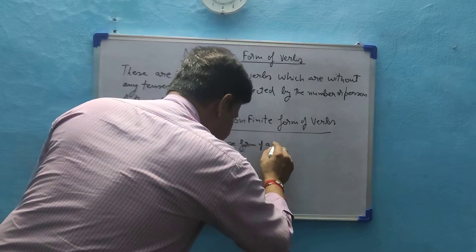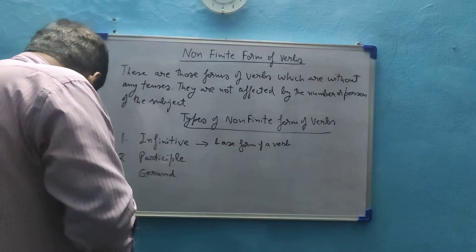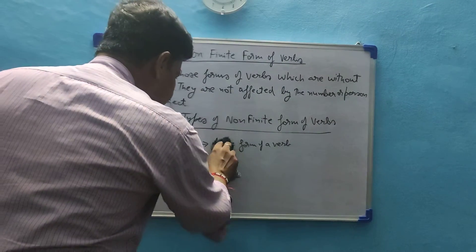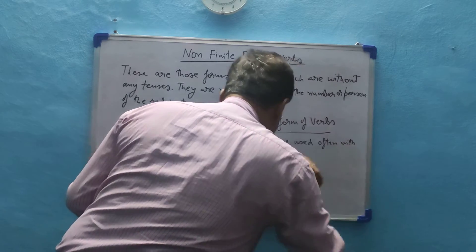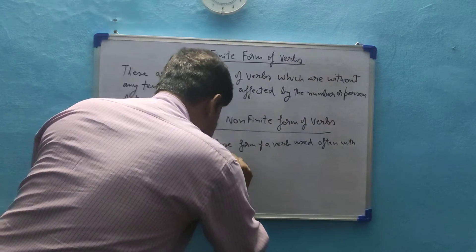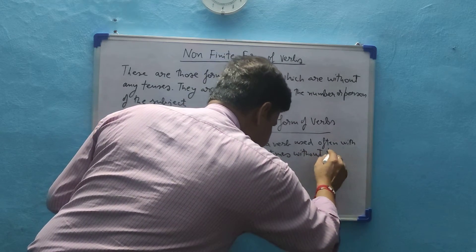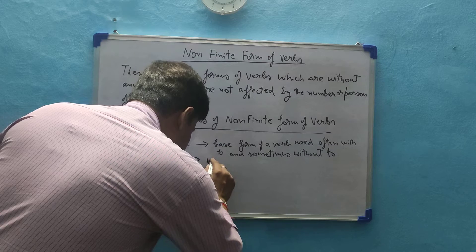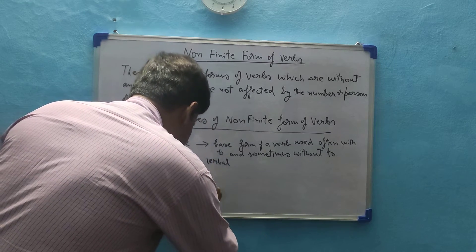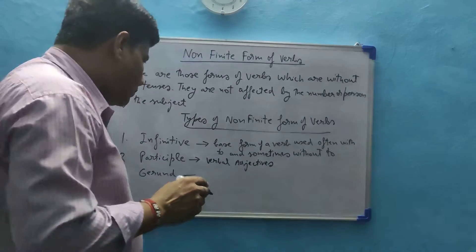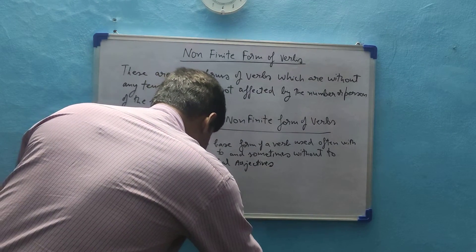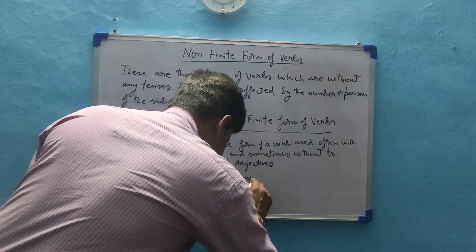How many types of non-finite verbs are there? There are three types of non-finite forms of verbs. Number one: infinitive. Number two: participle. And the third is gerund.